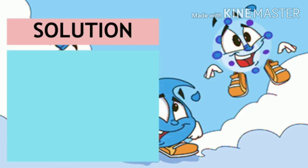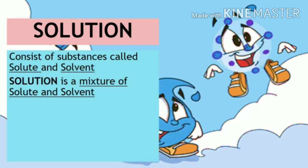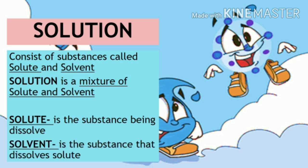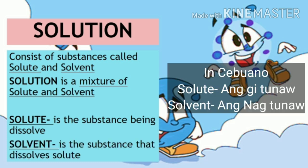What is a solution? A solution consists of a substance called solute and solvent. It is a mixture of solute and solvent. The solute is the substance being dissolved, while the solvent is the substance that dissolves the solute.